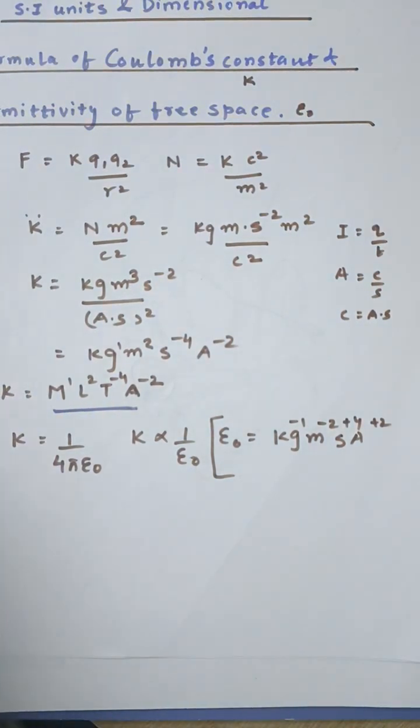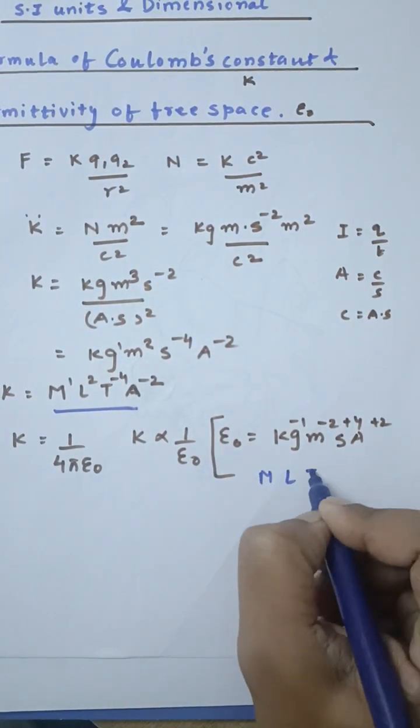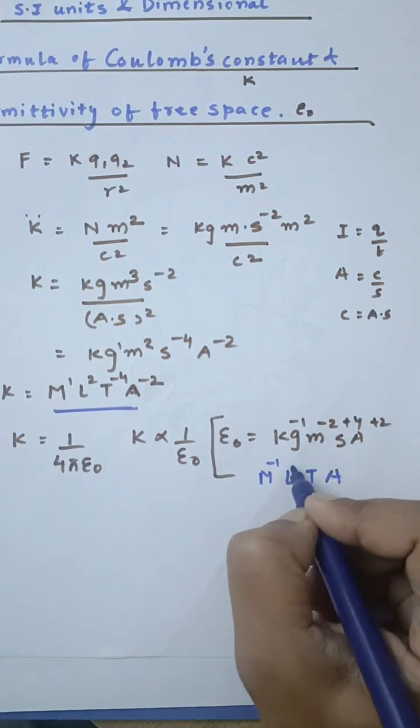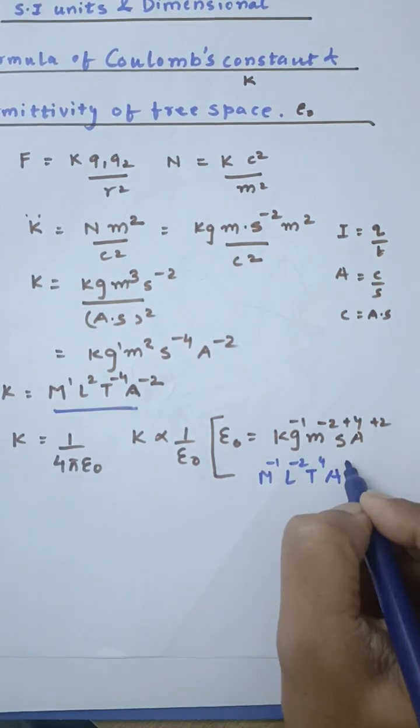So the dimensional formula can also be written as M, L, T, A: M⁻¹, L⁻², T⁴, and A².